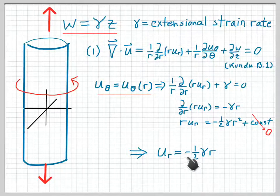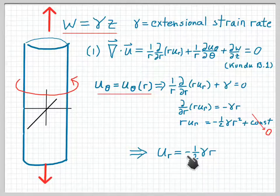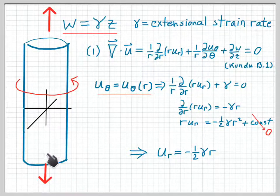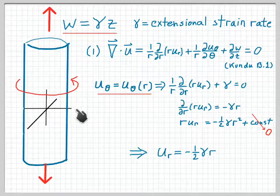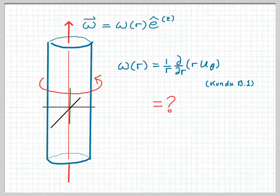Notice that w represents an extensional strain, whereas the radial velocity u_r represents a compressive strain, because of the minus sign. Notice also the factor of a half, which comes about because this vortex is being extended in one dimension, but compressed in two dimensions. And so, the compression in each coordinate only has to be half as strong.